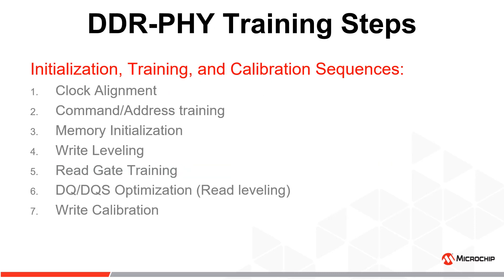The steps taken for initialization and training include clock alignment, command and address (CA) training, memory initialization, write leveling, read gate training, DQ-DQS optimization, and write calibration. These processes are covered in the following slides.